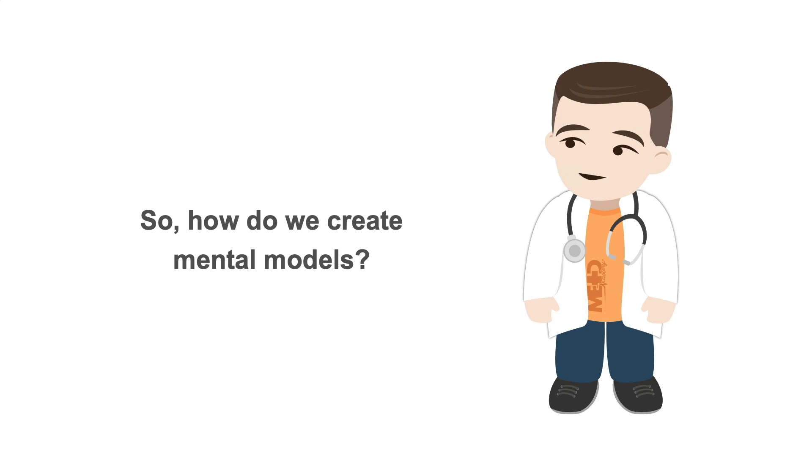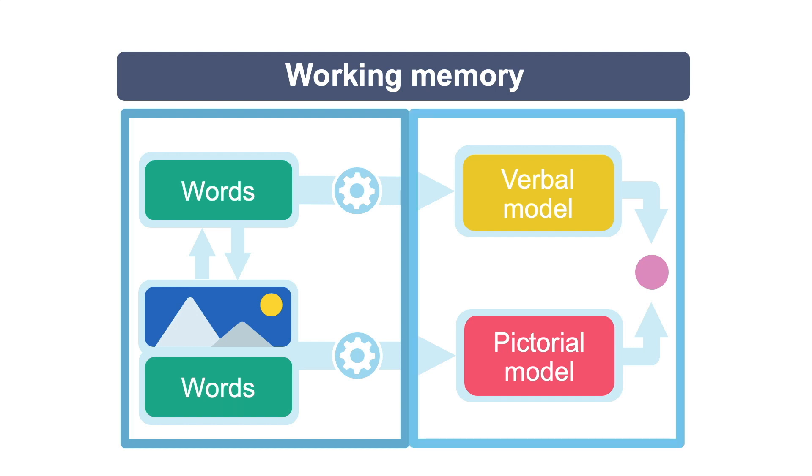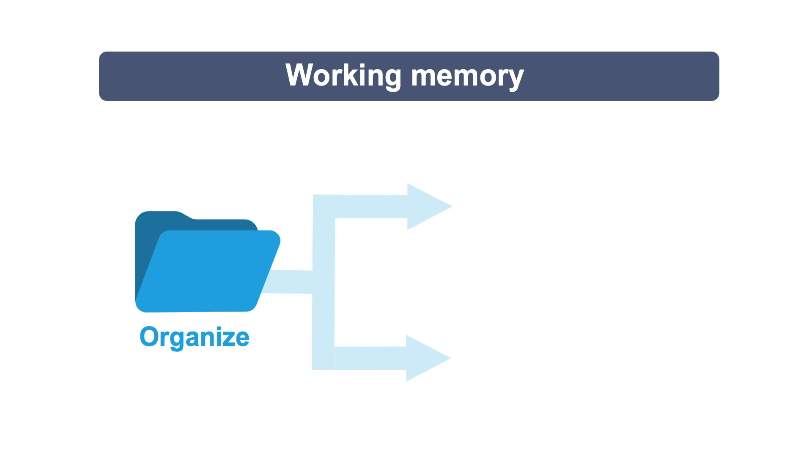So how do we create mental models then? Once the alignment between images and words has taken place, then your working memory moves to the next step and organizes the information into verbal and pictorial mental models.